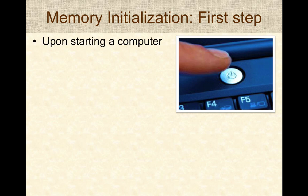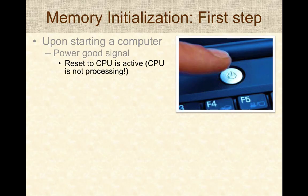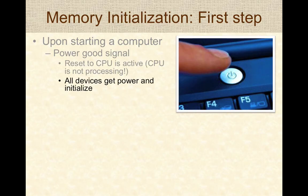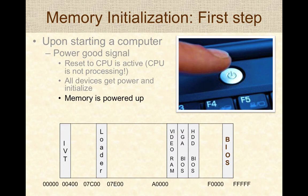When the computer is powered on, the computer gets what's known as a power good signal. In this state, the CPU is held in a reset mode, meaning the CPU is not processing or trying to execute instructions. All devices get power and initialize themselves. Then the memory layout is powered up, giving an initially very generic memory layout. Note that there are really no contents in RAM because it's volatile memory, and any data that was in there is lost when the computer is powered down.